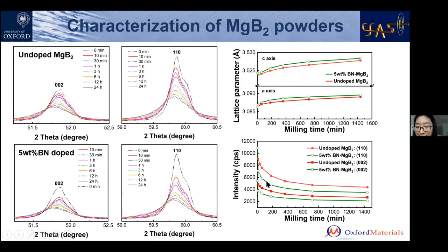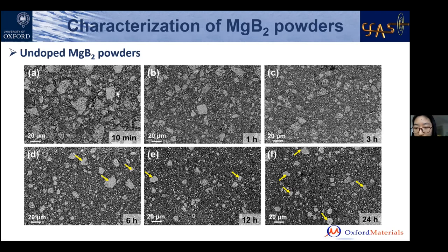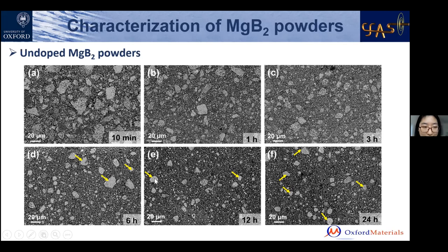SEM characterization of MgB₂ powders shows large MgB₂ particles with angular shape become finer with longer milling time. Inside these loosely packed agglomerates we can find dense regions — when ball milled, these dense regions survive while loosely packed regions break into pieces.